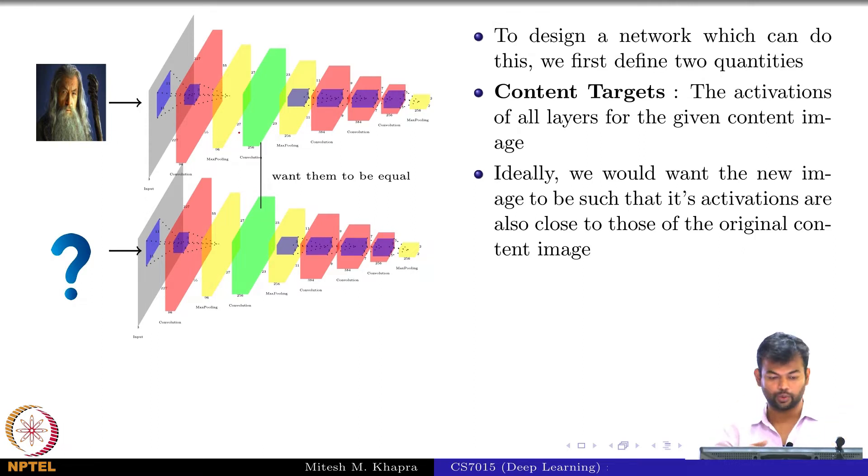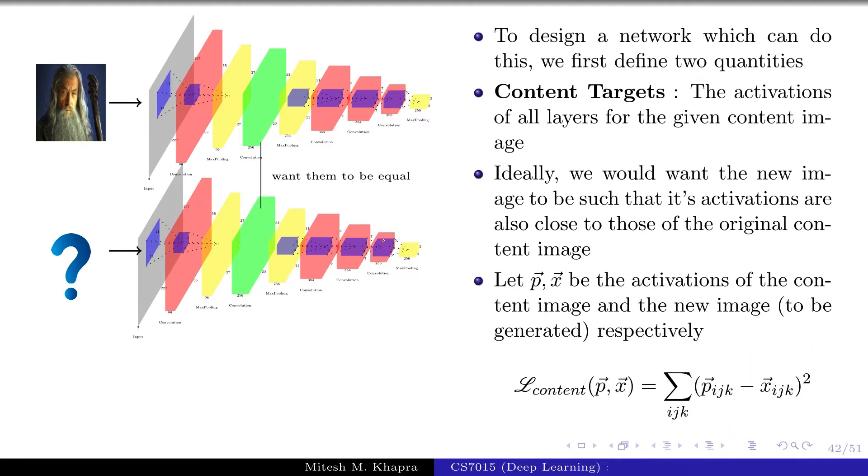I want these to be equal. I've shown one for illustration, but you could have the same objective function for all the representations. Remember we learn multiple representations in a convolutional neural network. This is what my objective function would be for the content: I would want that this tensor, the volume i, j, k - every pixel or every feature value in the tensor for the original image should be the same as the generated image. My optimization problem is with respect to the image. I am going to change the image and this is the loss function.